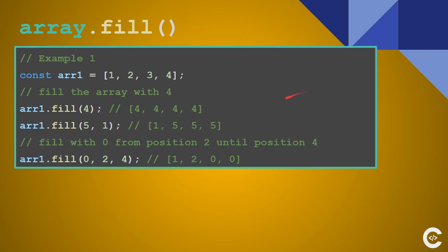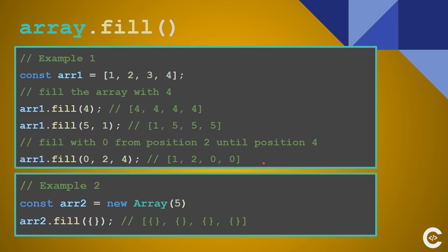fill fills the array with a number. It also has the possibility to pass second and third arguments to indicate from which position until which position you want to fill. The first example fills the whole array with 4. The second fills from position 1 with 5. The third fills with 0 from position 2 until position 4. If you have an array and want to fill it with empty objects, that can also be done.